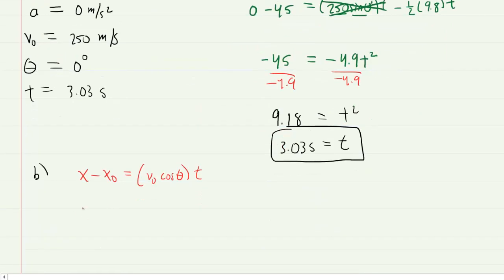We can plug in the known values. The final x-coordinate is unknown, so that's x. The initial is 0. And then we have the 250 cosine of 0 times the time.